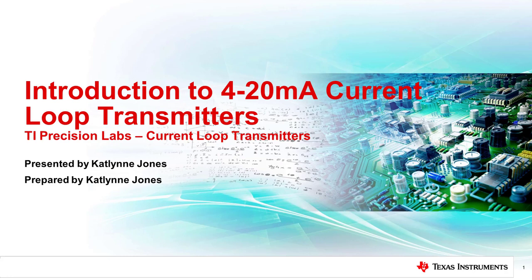Hello and welcome to the TI Precision Lab series discussing current loop transmitters. In this series we'll be covering concepts surrounding current loop transmitters focusing on the common 4 to 20 milliamp range. This video will serve as an introduction to the 4 to 20 milliamp concept as well as provide a few application examples and different approaches to designing a current transmitter into your system.